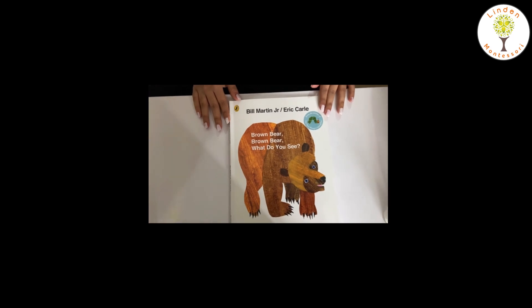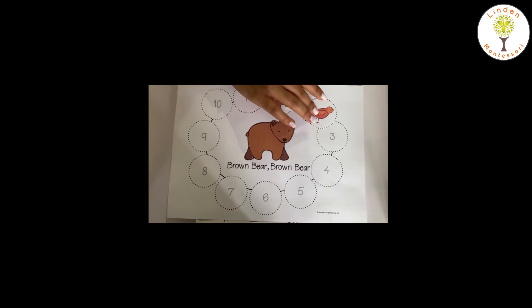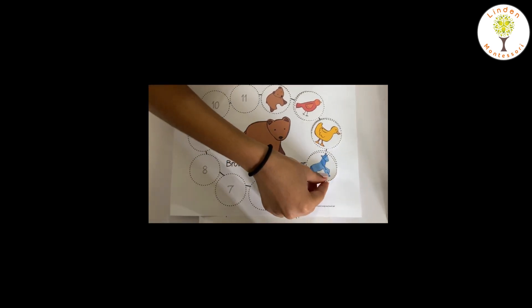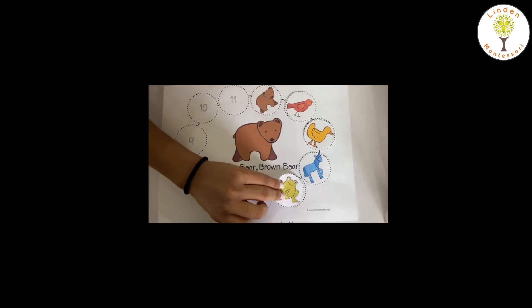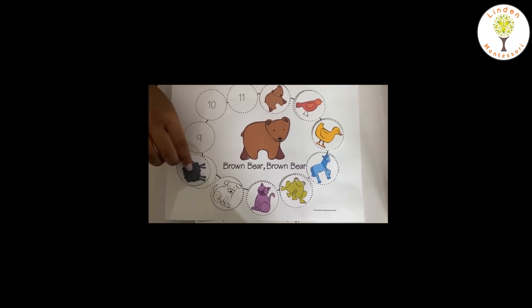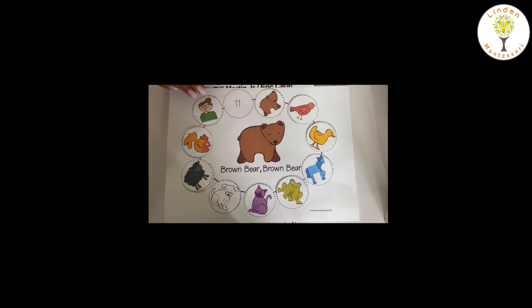Now we will do the sequencing activity. First, what did we see? Brown bear. Next, red bird. Next, yellow duck. Next, we saw blue horse. Then green frog. Then purple cat. Then white dog. Then we saw black sheep. And then goldfish. And teacher. And the children. So this is the sequencing.